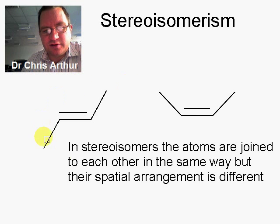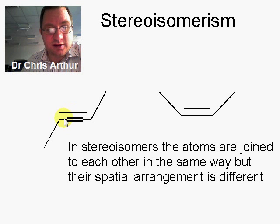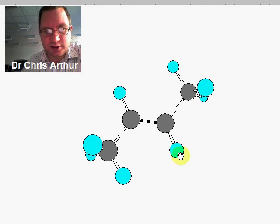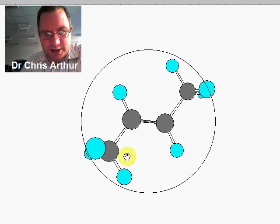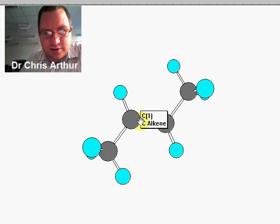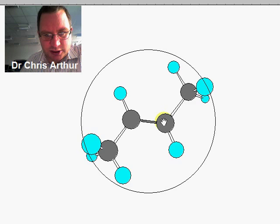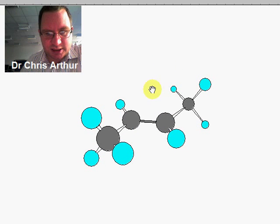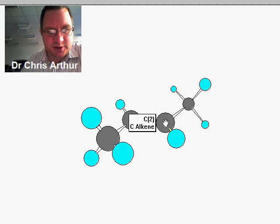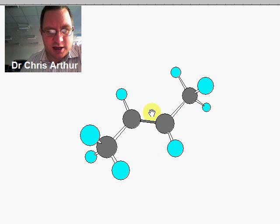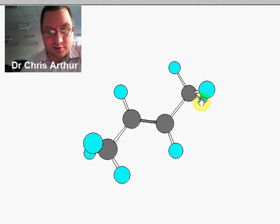But you'll meet stereoisomerism in a variety of different contexts. Now, you might need some convincing that these groups are actually in different spatial positions. So if I take you to look at a three-dimensional model of this, the gray line in the middle is a double bond. And you'll see that these atoms here are sp2 hybridized. They're flat. And then we have these two methyl groups at the ends.